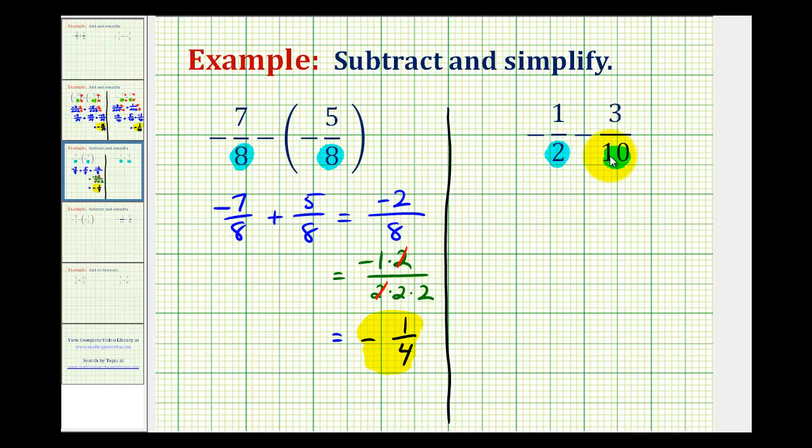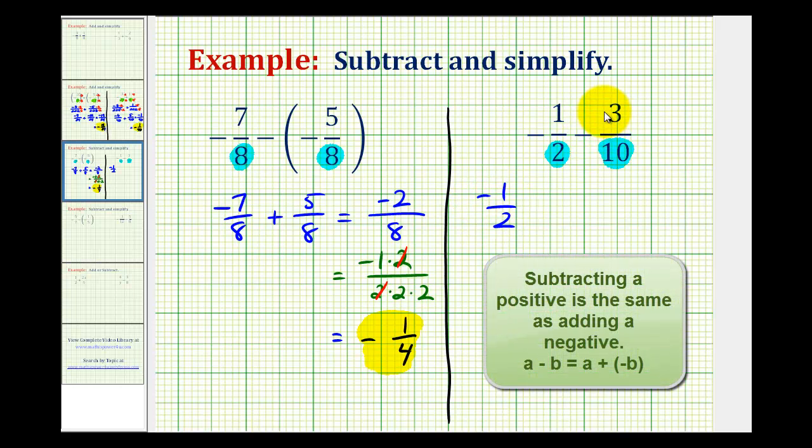Hopefully the least common denominator. But let's start by writing this as an addition problem, as well as moving this negative sign up into the numerator. So we'll have negative 1 over 2. And then subtracting positive 3 tenths is the same as adding negative 3 tenths.